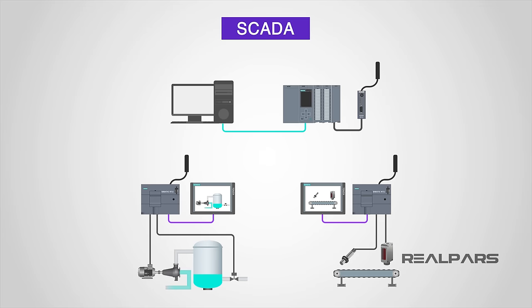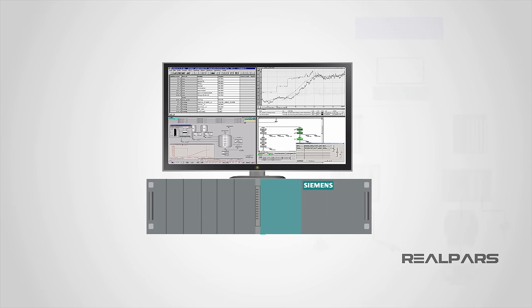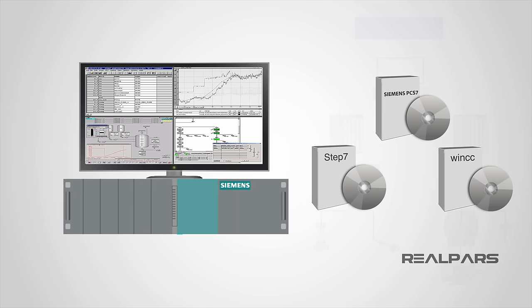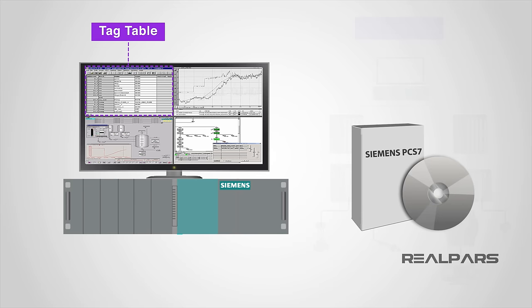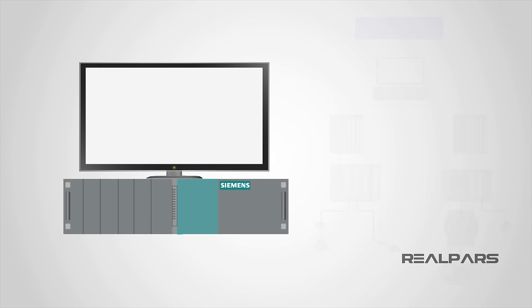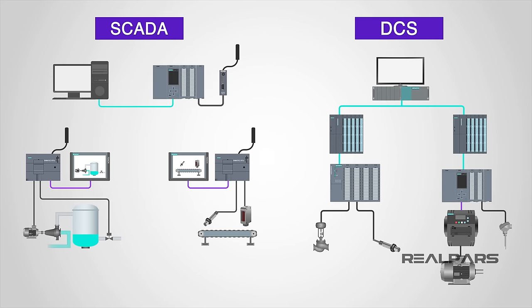While a SCADA system has HMIs or computers that are not necessarily of the same manufacturer, DCS systems have graphical interfaces that are typically integrated within the DCS system. This is a definite plus, as the requirement for additional software is not needed. As a bonus, the tags within the DCS are available for use without much additional effort. Clearly, the DCS has the advantage in this category.